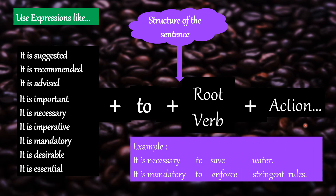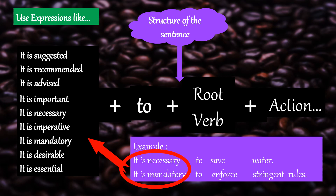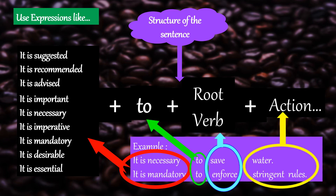Let's look into an example. 'It is necessary to save water.' 'It is mandatory to enforce stringent rules.' These sentences are recommendations. I have started with a set phrase — 'it is necessary' or 'it is mandatory' — followed by 'to', then a root verb, and then the action.